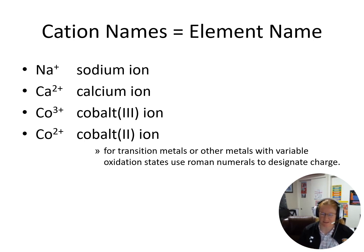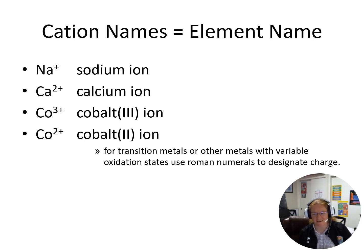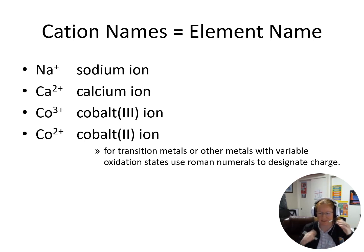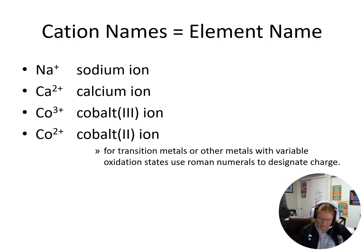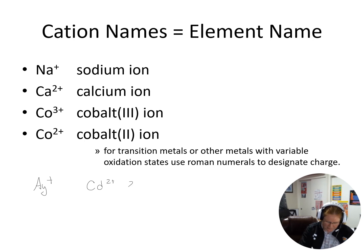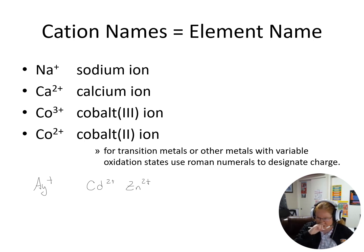When I get into my transition metals in the in-between portion, they can form lots of different ions, so I have to use a Roman numeral to indicate their charge. Like cobalt — sometimes cobalt is a plus three, sometimes a plus two. So cobalt three means plus three charge, cobalt two means plus two. However, a few transition metals have fixed charges: silver is always plus one, and cadmium and zinc are always plus two, so they don't get Roman numerals. But the other transition metals do.